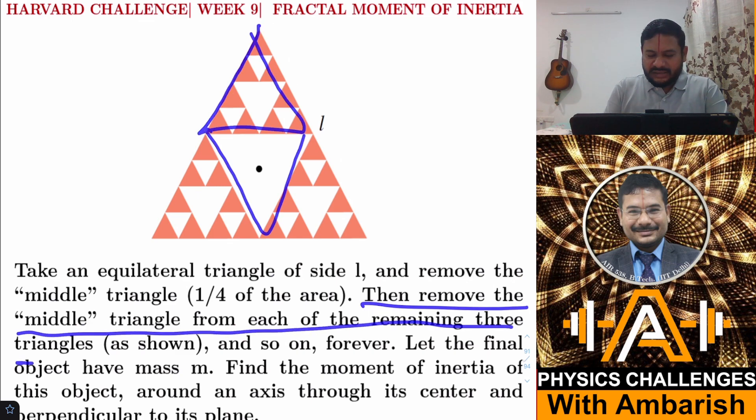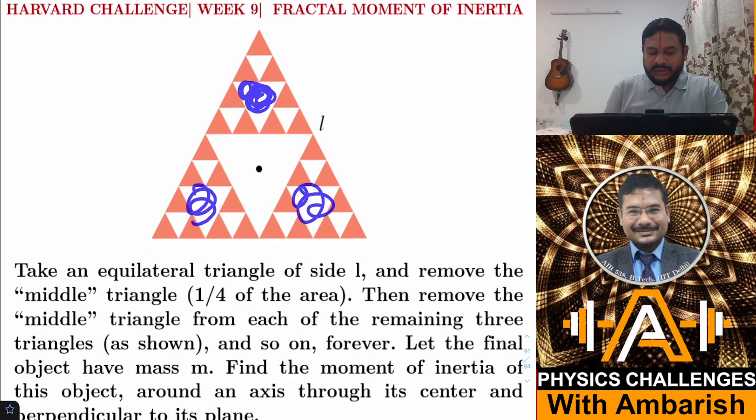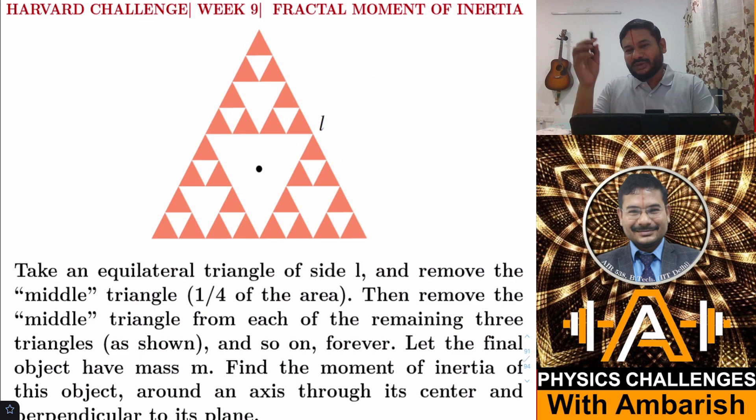Then remove the middle triangle from each of the remaining three triangles. You have three remaining triangles, and now you're going to remove the middle triangle again. You have removed the middle triangle, again having three triangles, so again you remove the middle triangle and so on. This process goes on indefinitely.